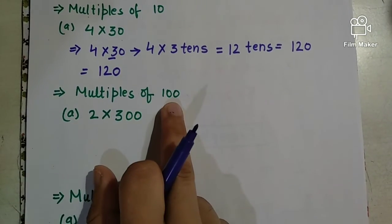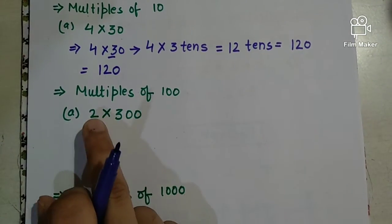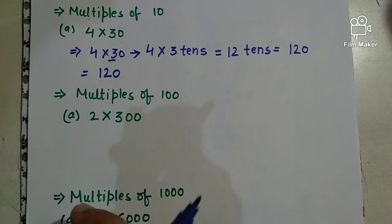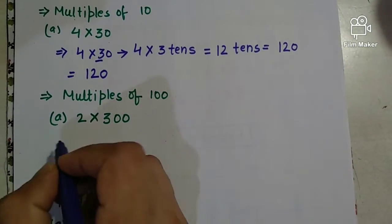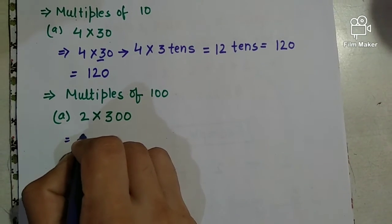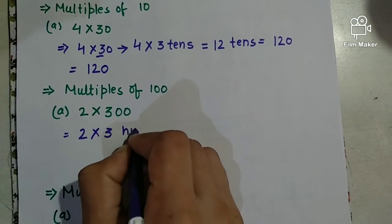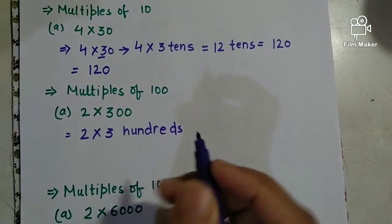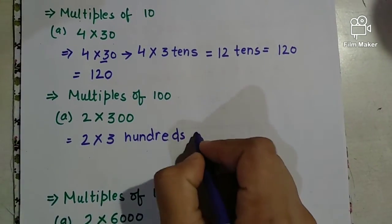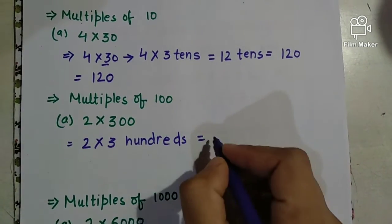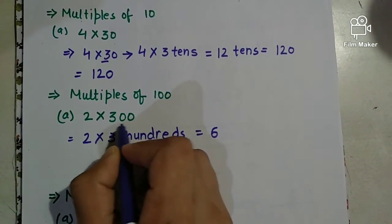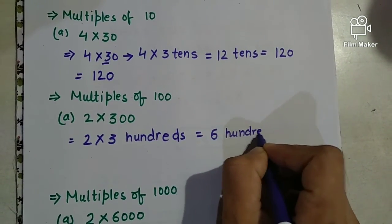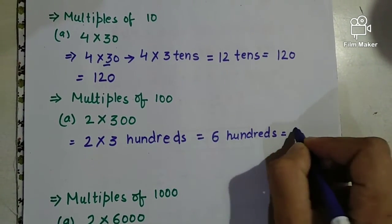Now how can I multiply with the number hundred? We have two into three hundred. Two threes are six, and with the remaining two zeros, we get six hundred.